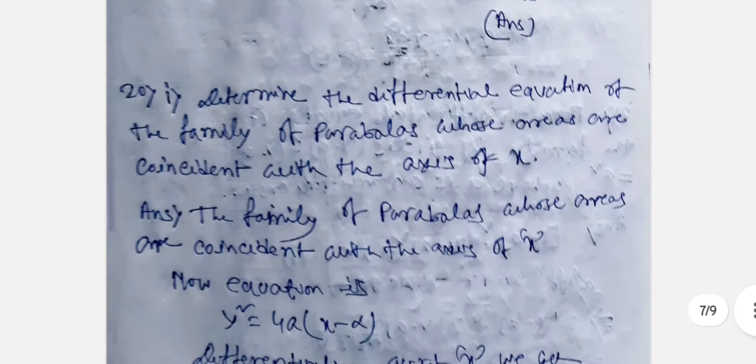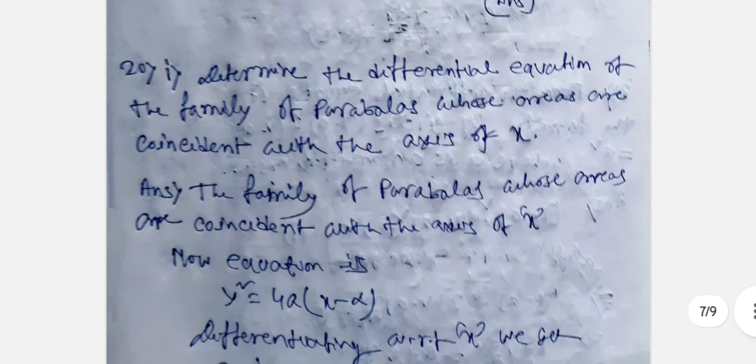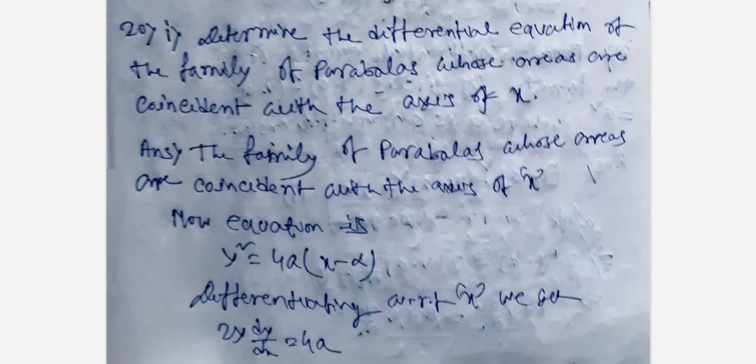Next question: Form the differential equation of the family of parabolas whose axes are coincident with the axis of x. The equation is y² = 4a(x - alpha). Differentiating with respect to x: 2y·dy/dx = 4a. Again differentiating: y·d²y/dx² + (dy/dx)² = 0.